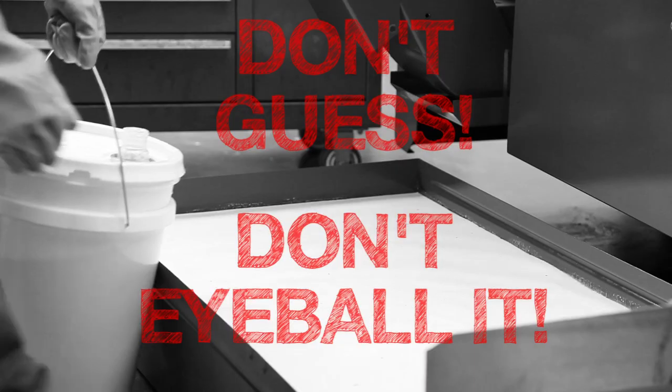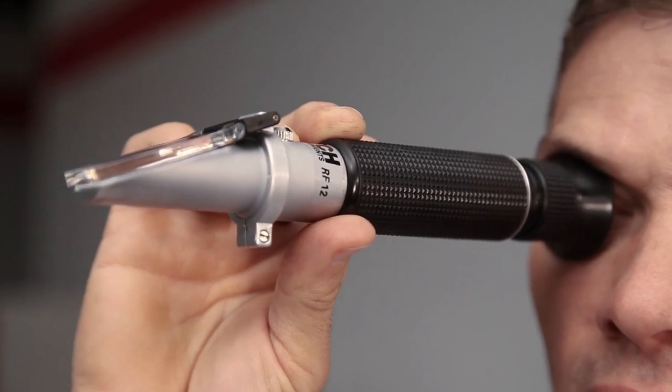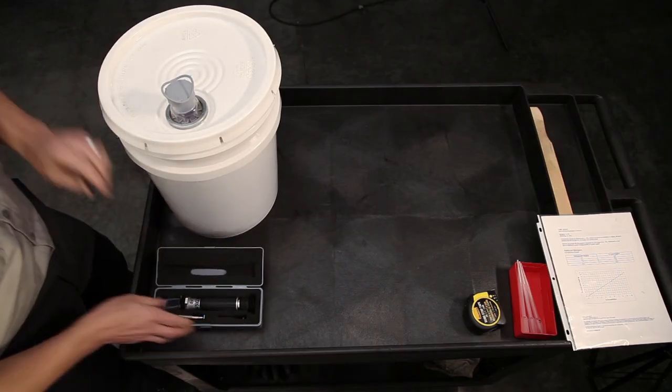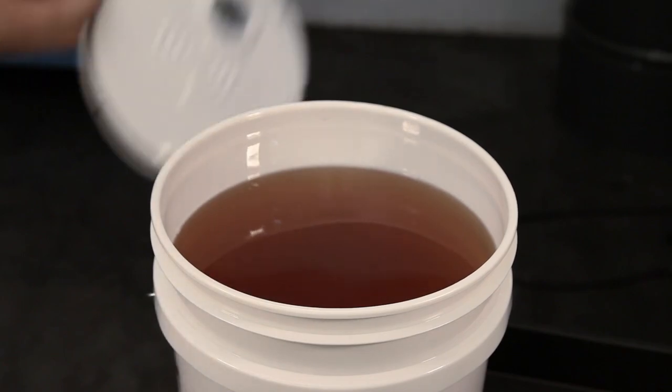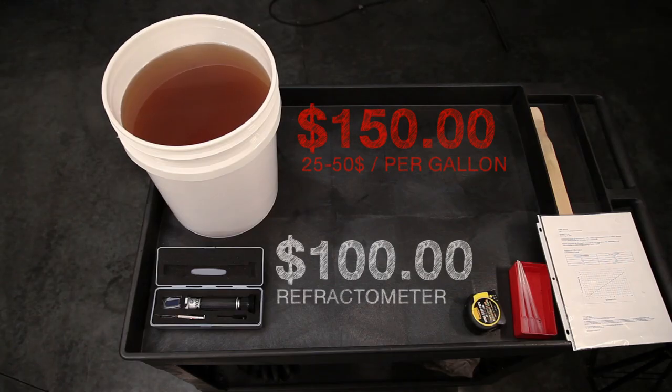We're using a manual model here, but digital versions are also available. Think about this: for less money than this 5-gallon pail of concentrate, you can purchase this tool and never have to guess about your concentration again.